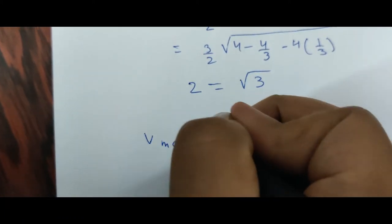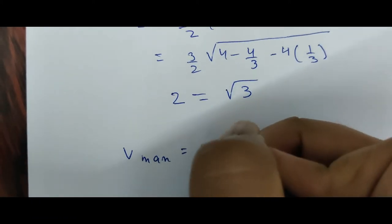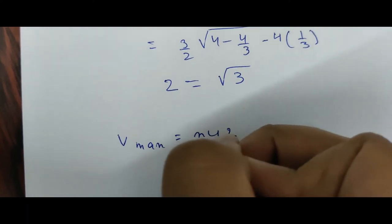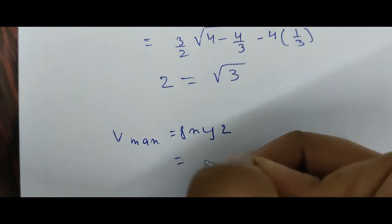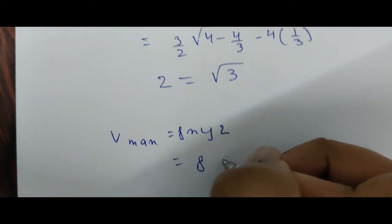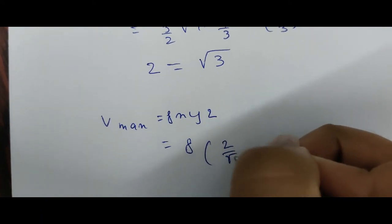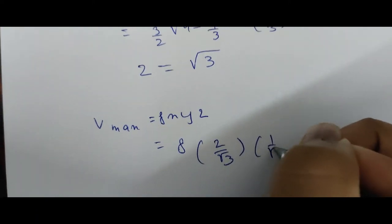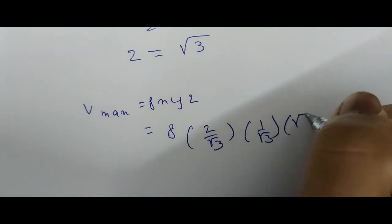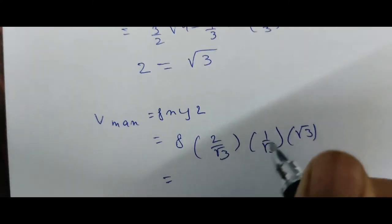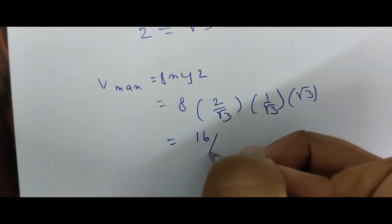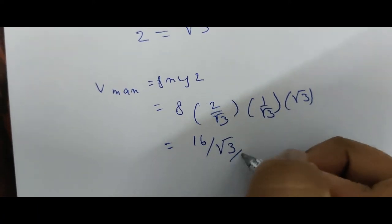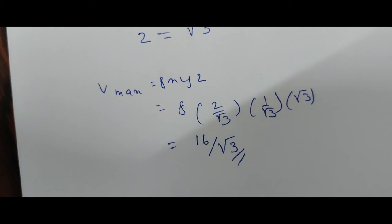The maximum volume is 8 · x · y · z = 8 · (2/√3) · (1/√3) · √3 = 16/√3, which is the same answer we got from the Lagrange multiplier. Hence the answer is verified.